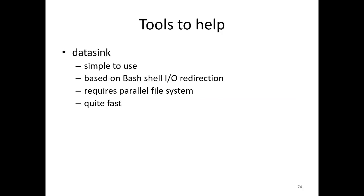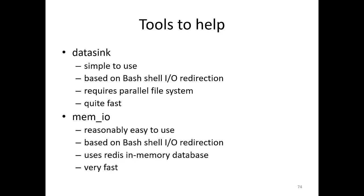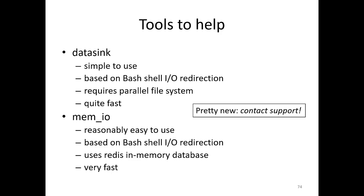There are some tools to help. For instance, there is datasync, which is quite simple to use, based on bash shell IO redirection, and requires a parallel file system — it's quite fast. Another option is memio, which is reasonably easy to use but requires some setup in your jobs. It is based on bash shell IO redirections and uses Redis, an in-memory database, to perform IO — making it very fast. Both are pretty new; if you want to use them, contact support.